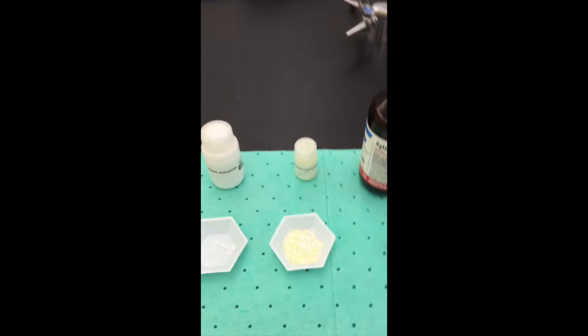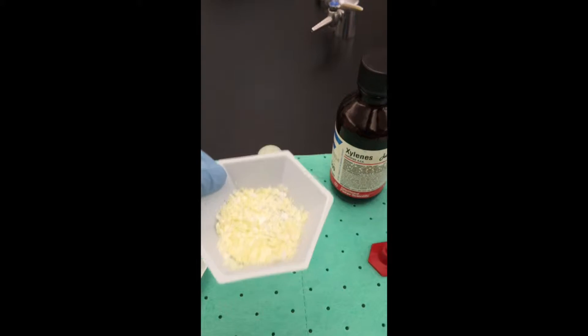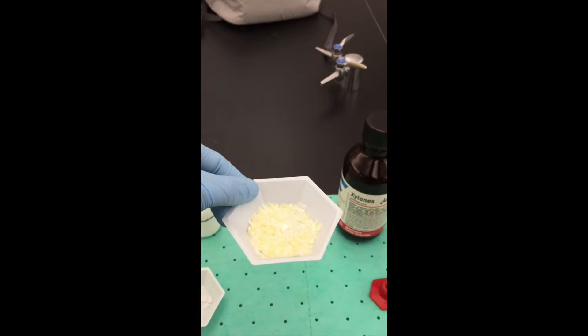Okay, this is the Diels-Alder reaction. We are going to combine a boiling chip with one gram, which is four millimoles, of 1,4-diphenylbutadiene.